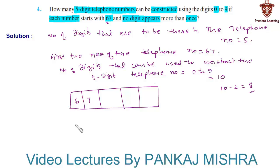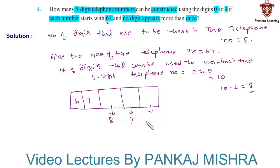The third place can be occupied by any one of the remaining 8 digits in 8 different ways. Similarly, the fourth place can be occupied by the remaining 7 digits in 7 different ways, and the fifth place can be occupied by the remaining 6 digits in 6 different ways. Therefore, by the multiplication principle of counting, the total number of five-digit numbers that can be formed are 8 × 7 × 6.